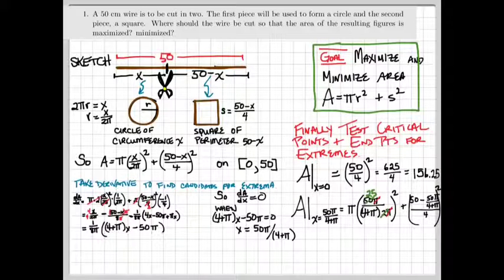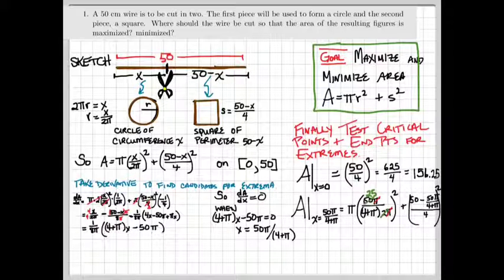When x is 50 pi divided by 4 plus pi, we get an answer. And as I tried to do it exactly, I found myself faltering. So I took the next step and actually brought out my calculator. I found that the area in this case was 87.5 centimeters squared.